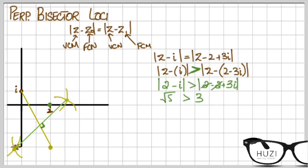And root 5 is 2.23, so this is not greater than 3. So this means that the region that we're looking for is this one.